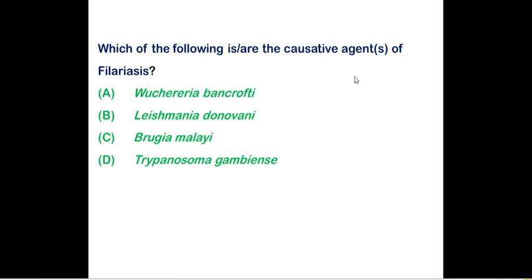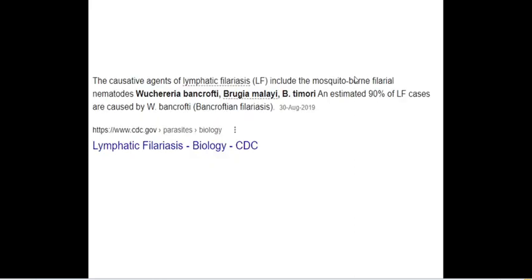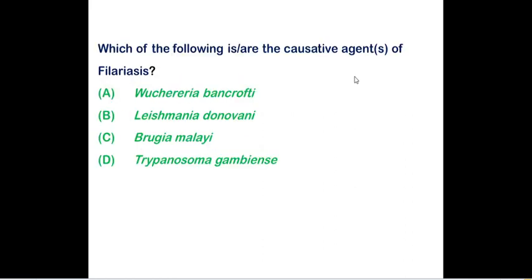Which of the following is or are the causative agent for filariasis? If you refer the CDC website here, I have given three filarial nematodes responsible for causing lymphatic filariasis. First is Wuchereria bancrofti, next is Brugia malayi, next is B. timori. And 90% of lymphatic filariasis is caused by Wuchereria bancrofti.